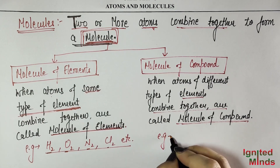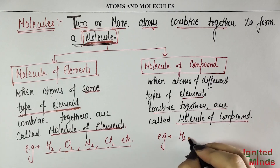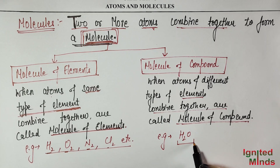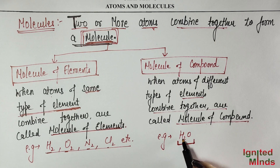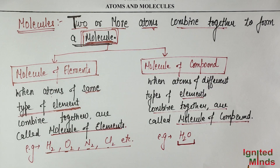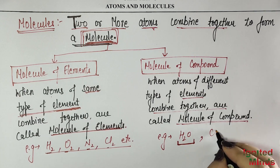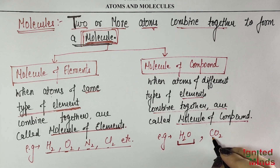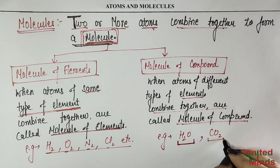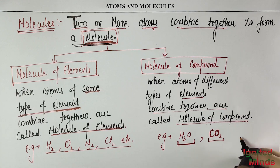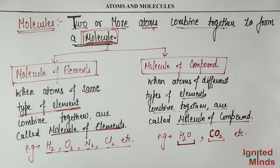When there are different elements combined, that is a molecule of compounds. For example, water H₂O — here hydrogen and oxygen are different elements. It has 2 hydrogen atoms and 1 oxygen atom, totaling 3 atoms. Since hydrogen and oxygen are different elements, we call this a molecule of a compound. Similarly, carbon dioxide CO₂ has 1 carbon and 2 oxygen atoms, totaling 3 atoms — different elements, so it is also a molecule of a compound.